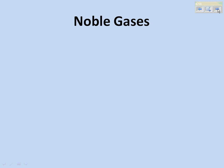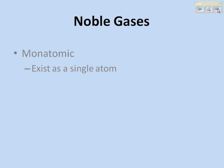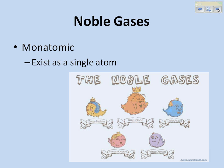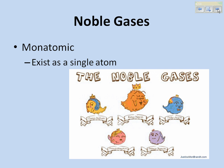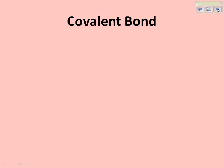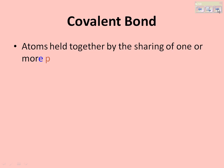Noble gases are not molecules — they're monatomic and exist as a single atom, so we can compare them to some other things. A covalent bond is when atoms are held together by the sharing of one or more pairs of electrons. We'll be looking at this in a lot of detail.